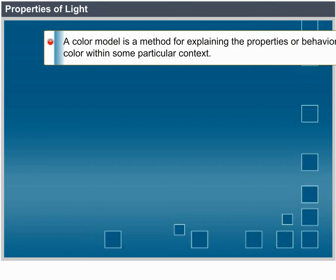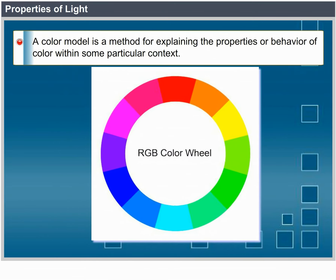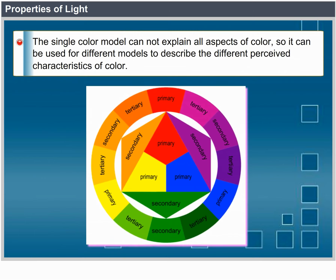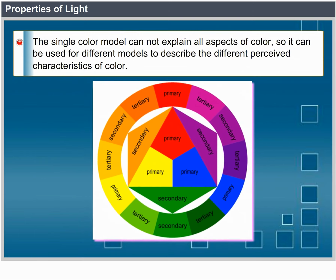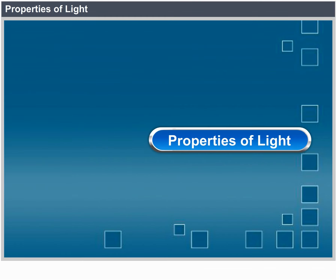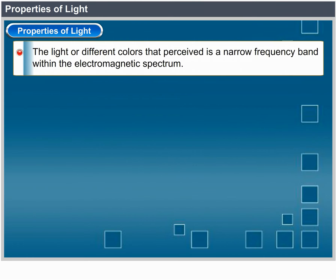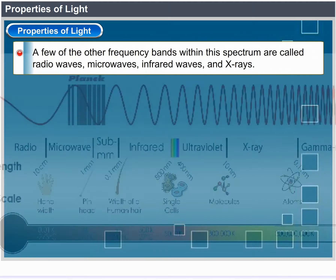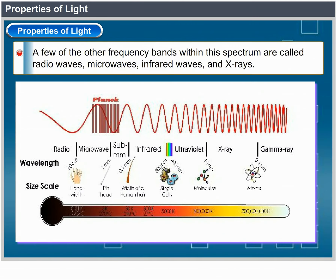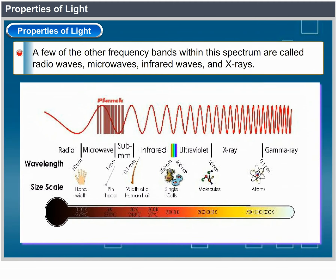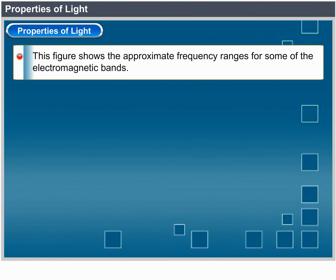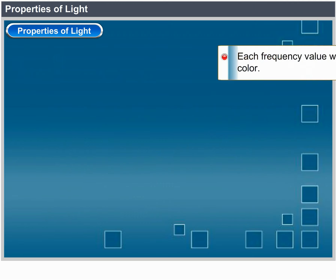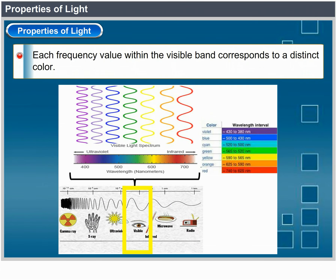Properties of light. A color model is a method for explaining the properties or behavior of color within some particular context. No single color model can explain all aspects of color, so we make use of different models to describe different perceived characteristics. What we perceive as light or different colors is a narrow frequency band within the electromagnetic spectrum. A few other frequency bands include radio waves, microwaves, infrared waves, and X-rays. Each frequency value within the visible band corresponds to a distinct color.